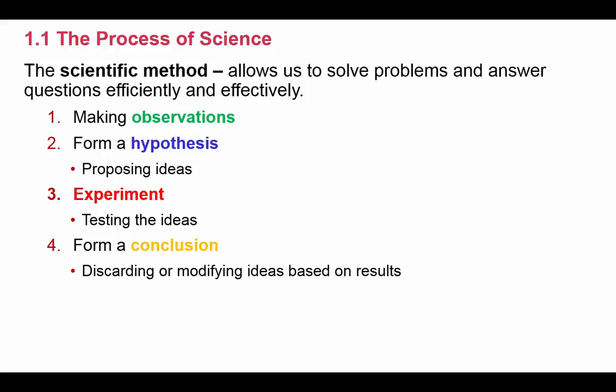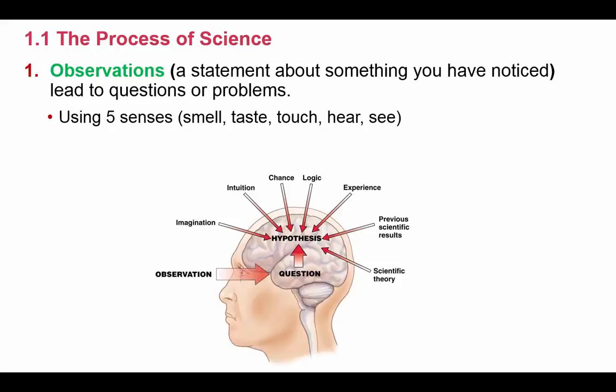The scientific method has four major steps. The first step is to make an observation. Second, use those observations to form our hypothesis. Third, experiment and test the hypothesis. And finally, form the conclusion — determine whether your hypothesis has been supported or not. This chapter is going to focus on these four steps and look in detail at what is going on in each of them.